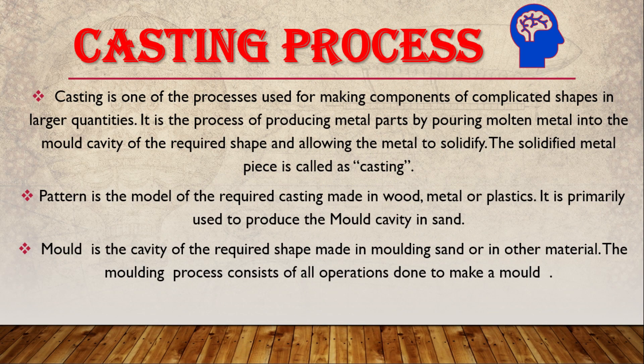What do you mean by casting? Casting is the process for making components of complicated shape in large quantity. We produce metal parts by pouring molten metal into a cavity, and we get a required solid shape. This is what we call casting.